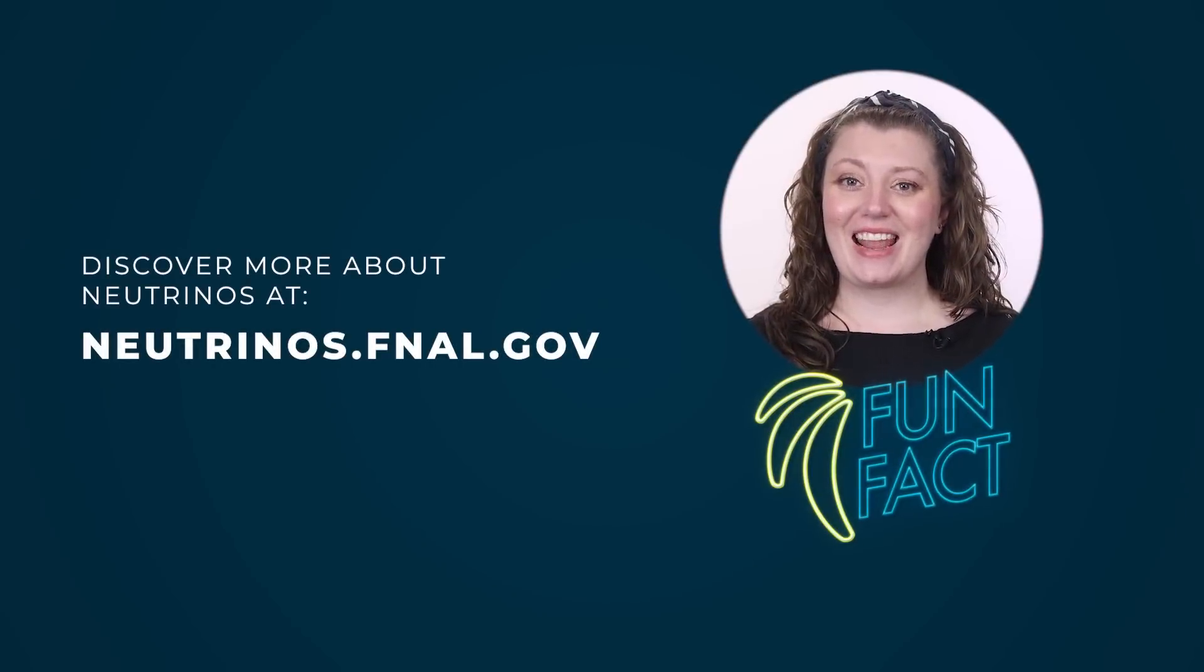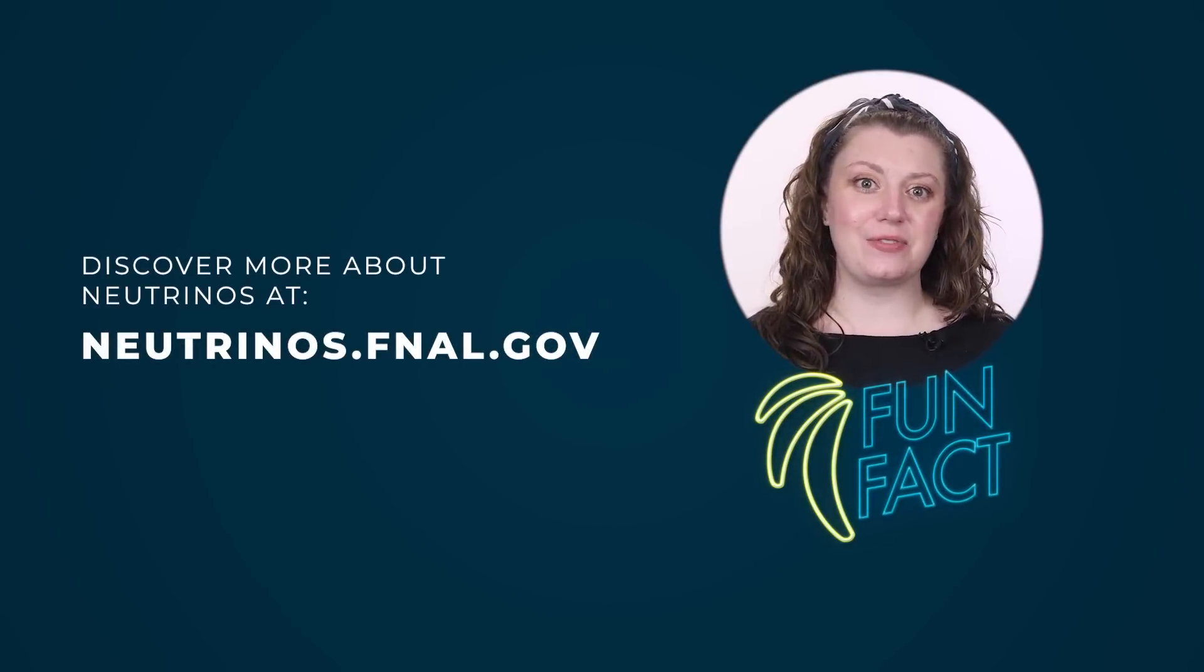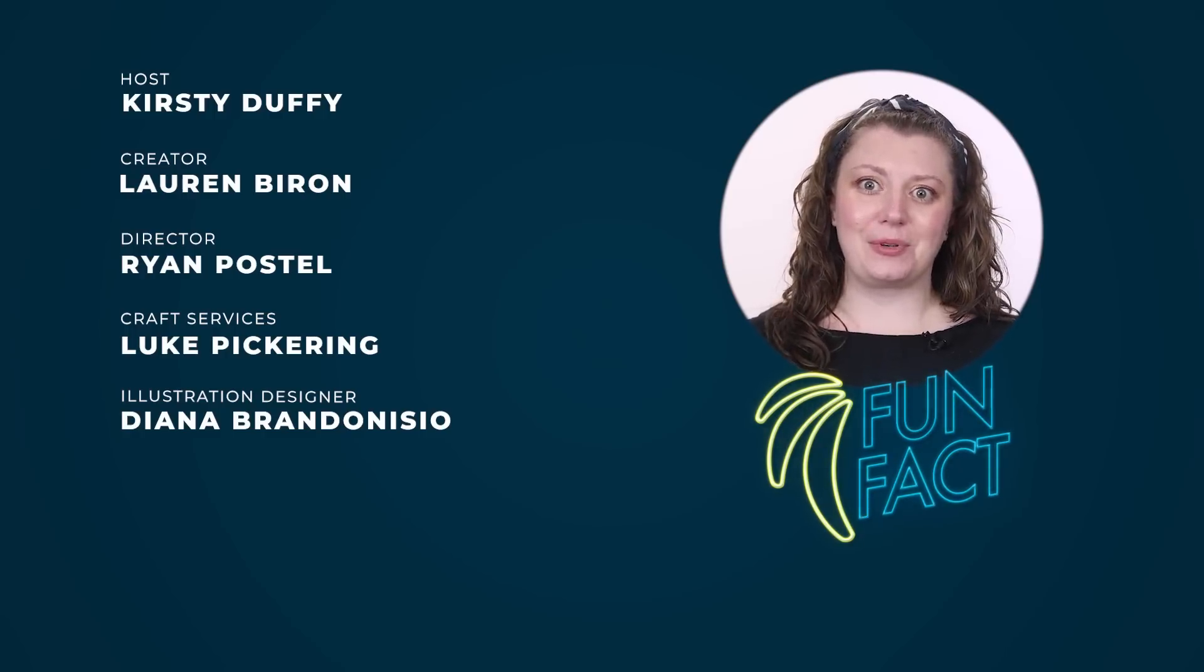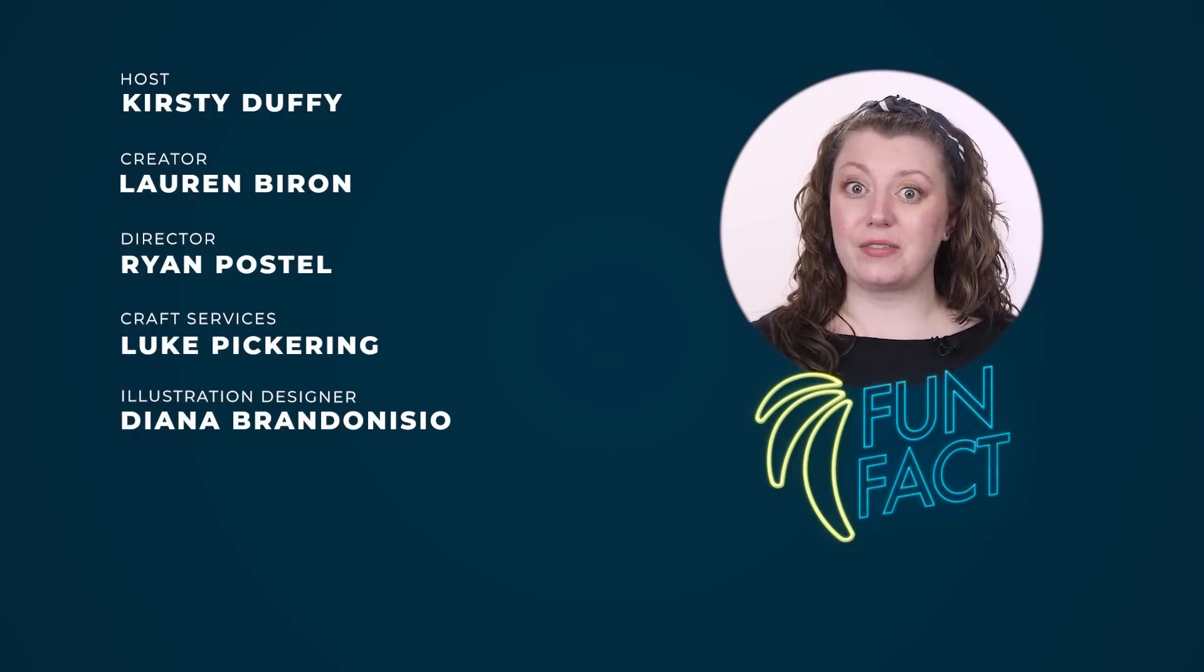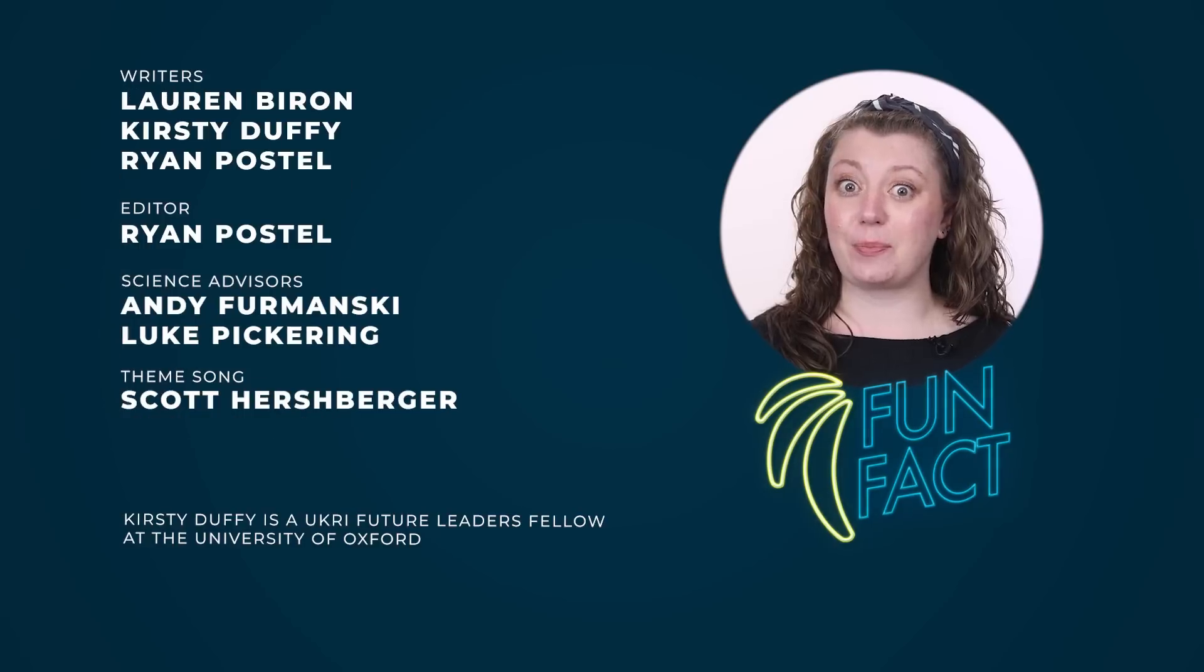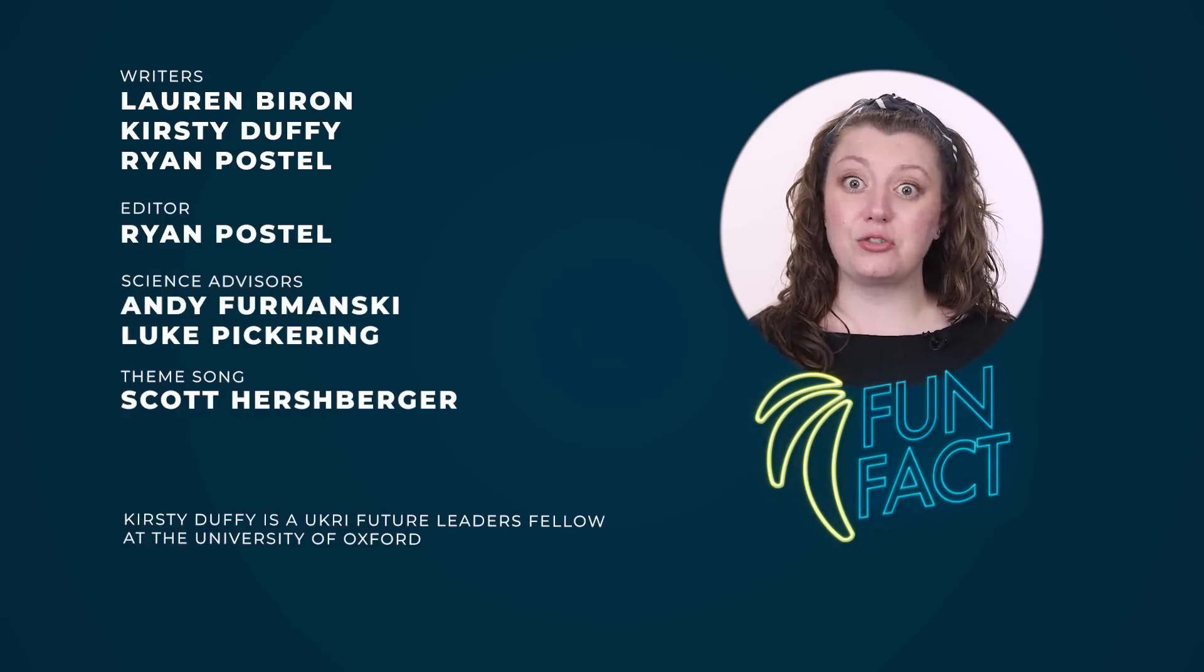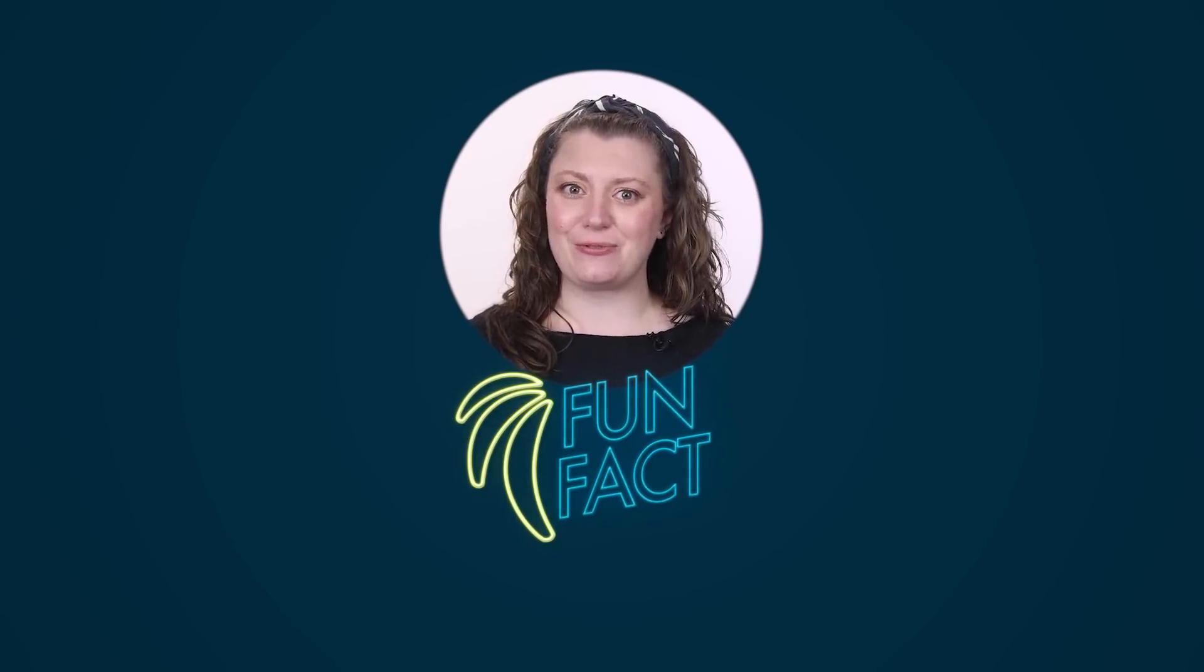Fun fact! In preparing for this video, we calculated the size of neutrinos and nuclei at a bunch of different scales. For example, if a nucleus was the size of the Earth, a neutrino would be about the size of a parking space. Or if a nucleus was the size of the Sun, a neutrino would be about the size of a comet. Trying to wrap your head around the scale of different things in the universe is really mind-blowing.